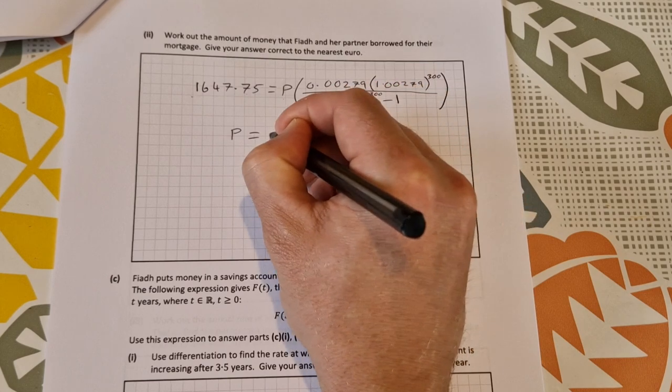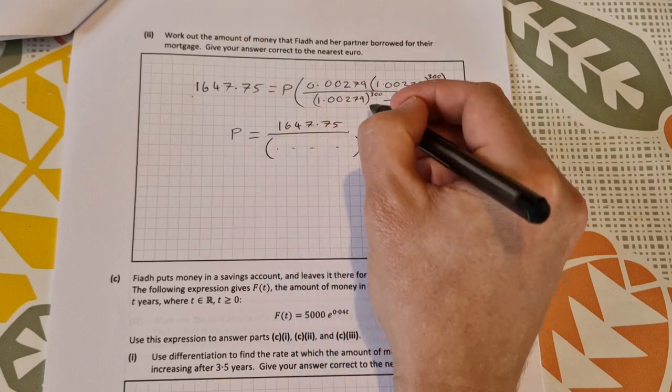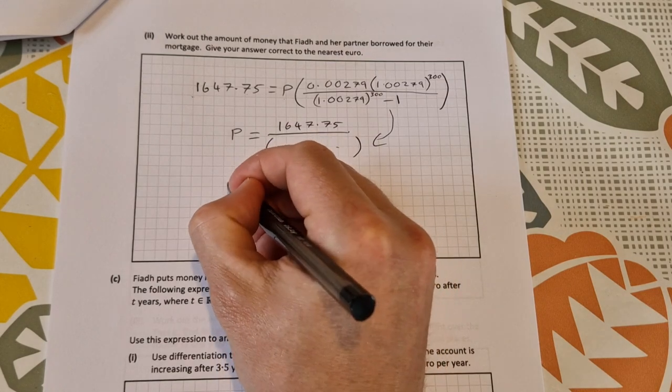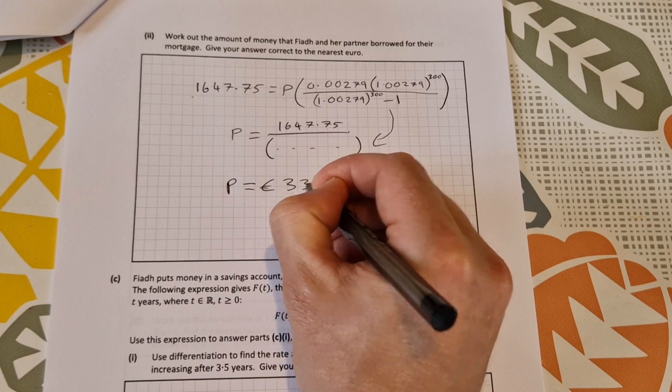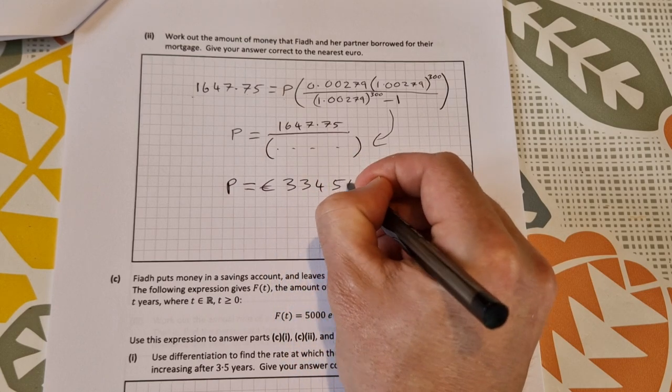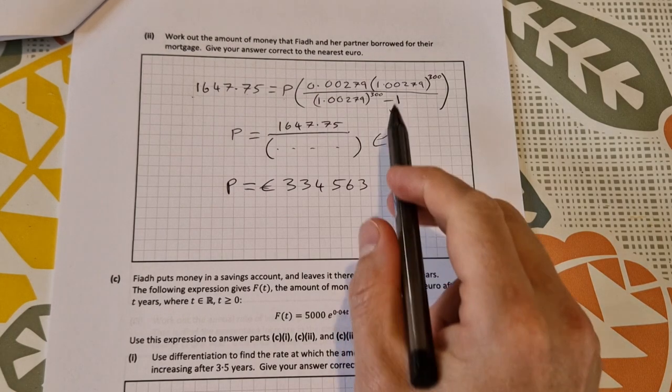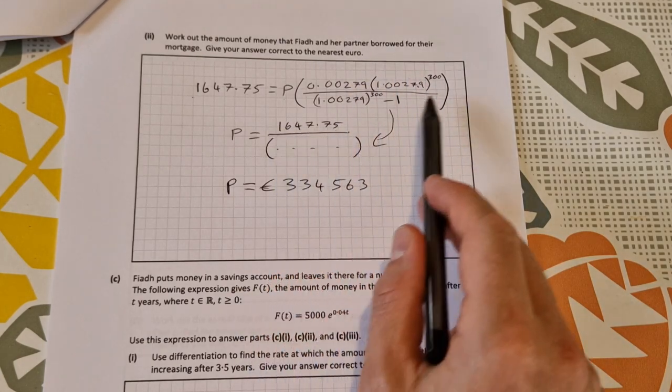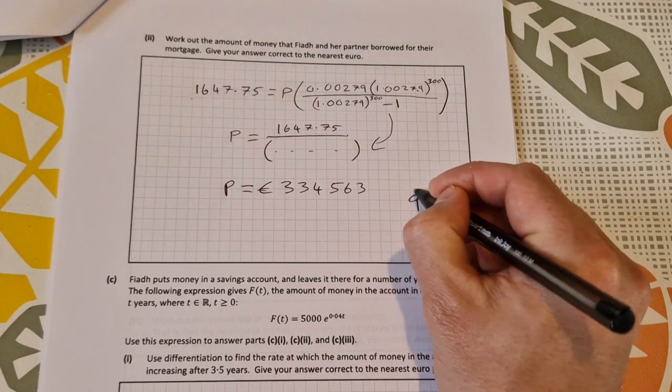So 1,674.75 divided by everything that's in that bracket there. I won't write it all in, you can put it into your calculator. Double check that you do get the right answer. To the nearest euro you should get P is equal to 334,563. If you're not getting that answer you're probably typing something into the calculator in an incorrect way, so just be very careful because there's a lot of places you can make errors. That's worth nine marks for the second part of B.